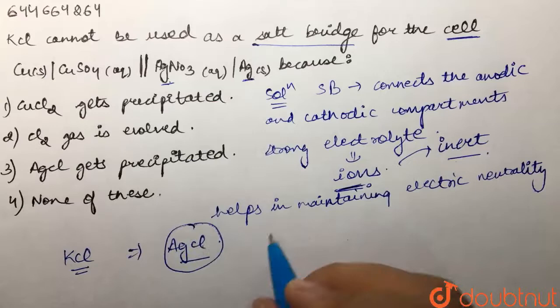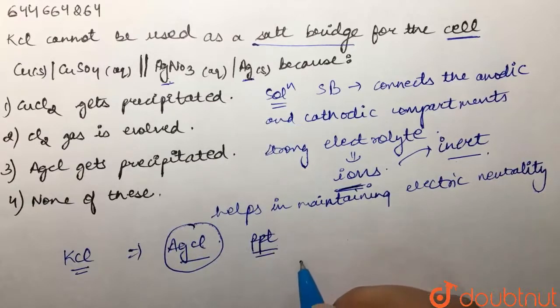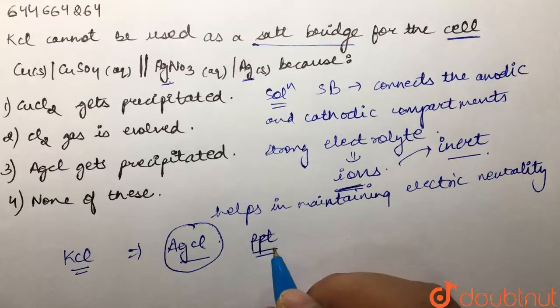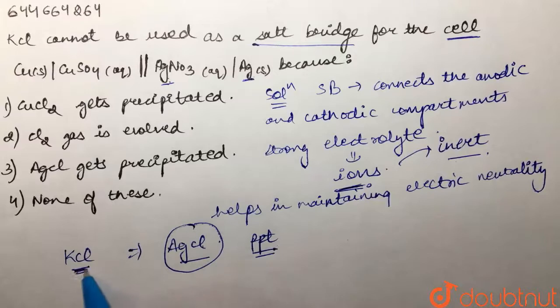And this AgCl—these are AgCl precipitates—so this is not our required product. So we can say that we should avoid KCl, because if we use KCl, there would be precipitation of AgCl in our cell, and that is not desirable.